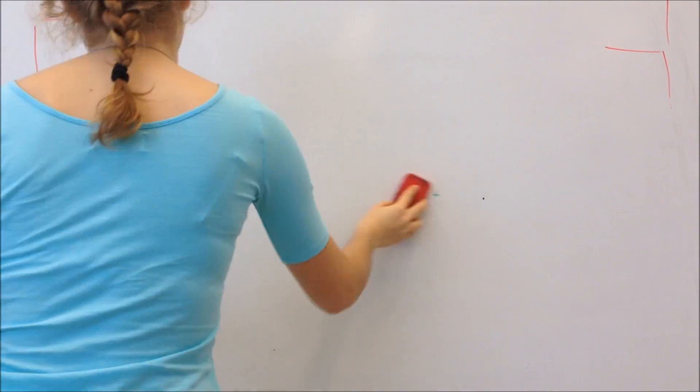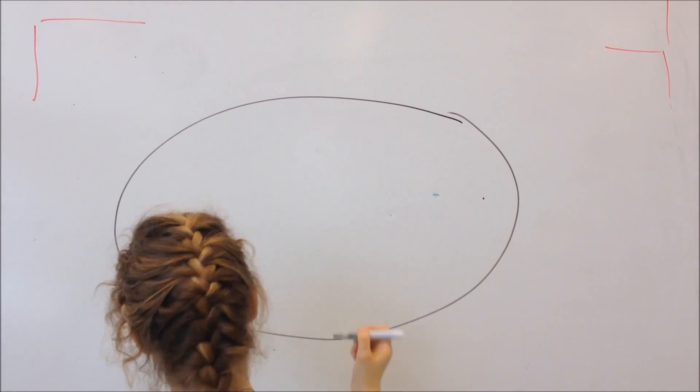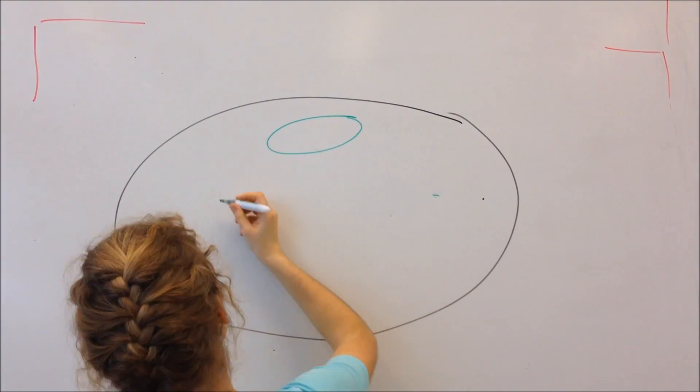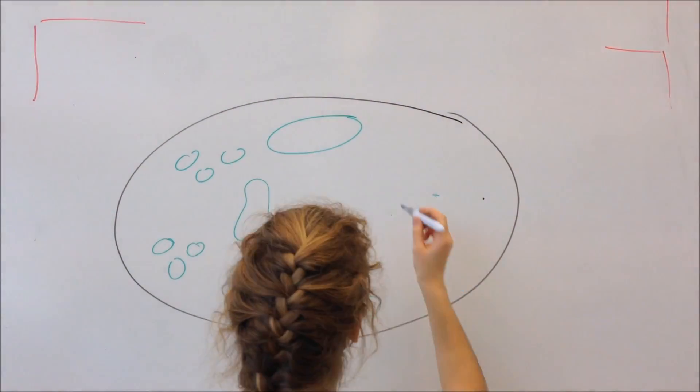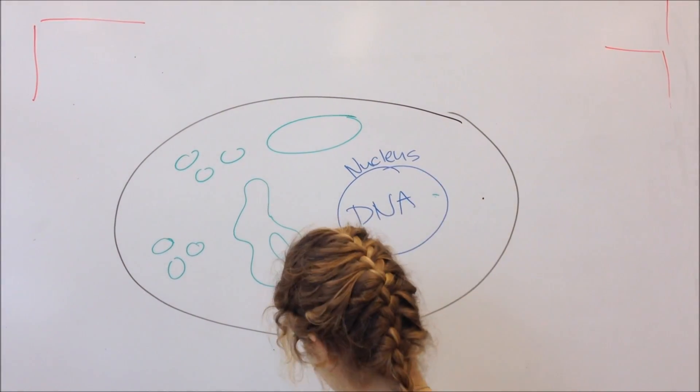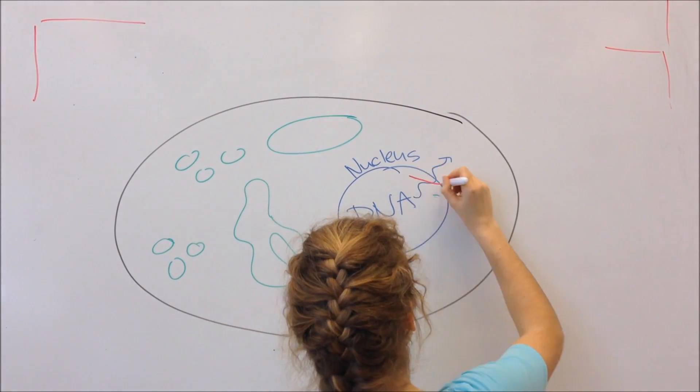To understand transcription, we should know that in a eukaryotic cell, DNA never leaves the nucleus, so its information must be copied because it's essential for running the cell. This copying process is called transcription, and the copy is created in messenger RNA.